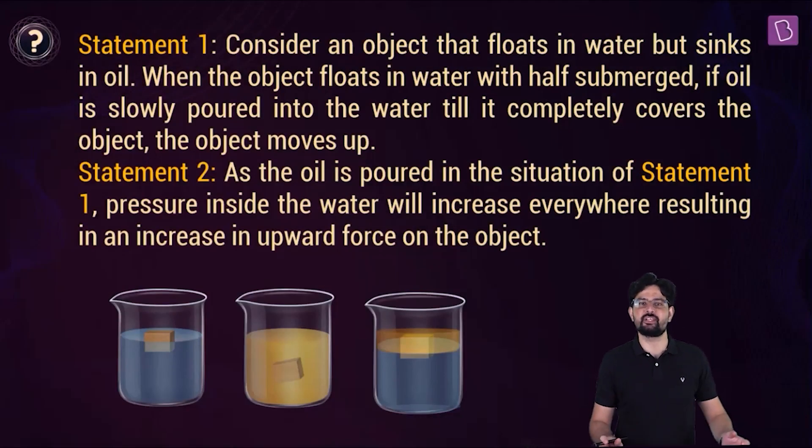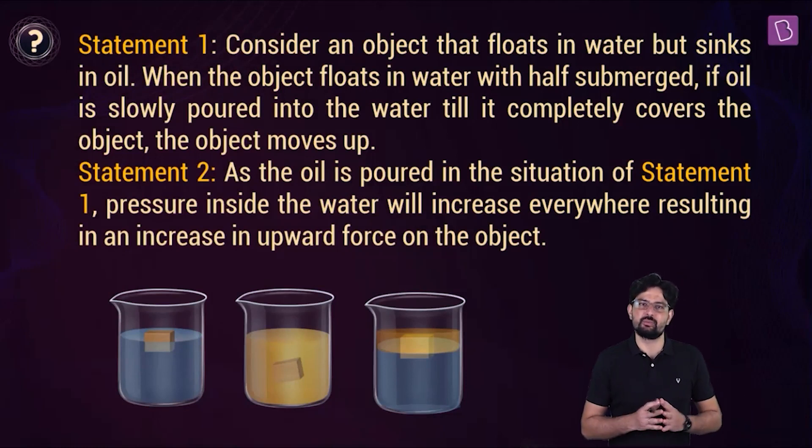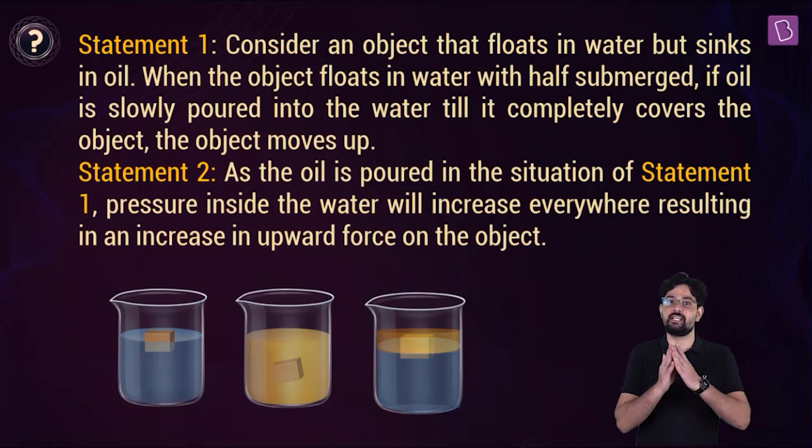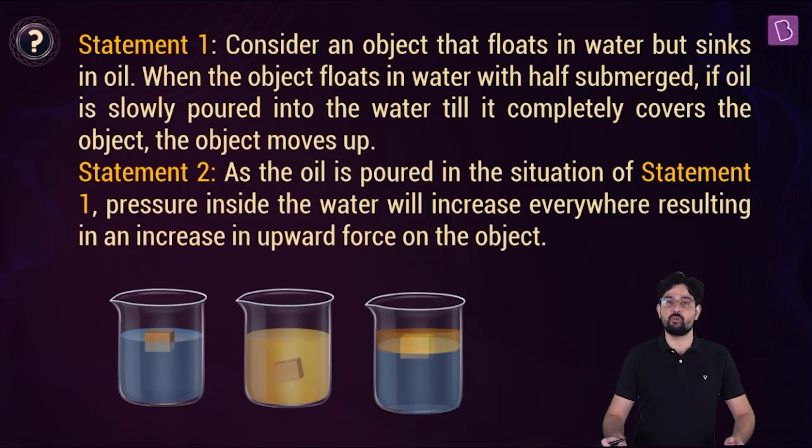Let's deal with this assertion reason problem. So what is statement one? Consider an object that floats in water but sinks in oil. So basically this object has a density more than the density of oil, but its density is less than that of water. When the object floats in water with half submerged, if oil is slowly poured into the water till it completely covers the object, the object moves up.